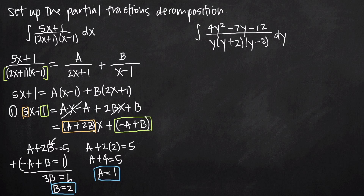There's another method as well. Going back to the equation we first got after multiplying both sides by the denominator, method two involves looking at each factor and figuring out what value of x makes that factor zero. For example, looking at x minus 1: if we set x equal to 1 then we get 1 minus 1 equals zero. This makes the A term disappear, leaving only B to solve for. This method requires us to look at each of our factors.